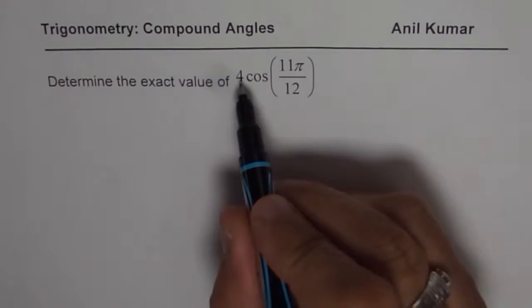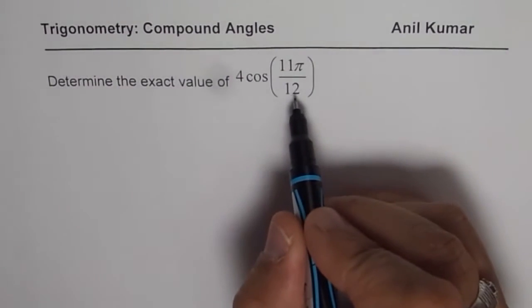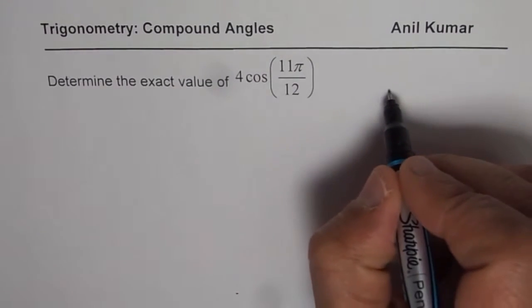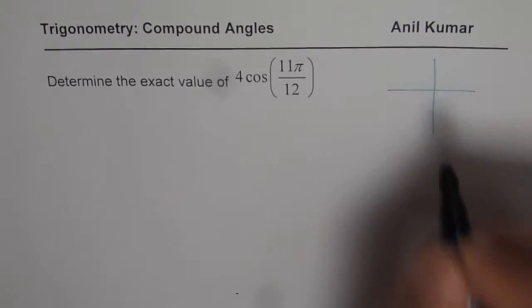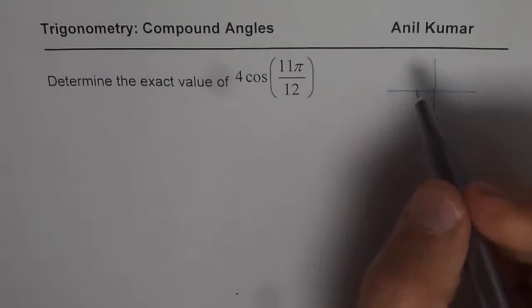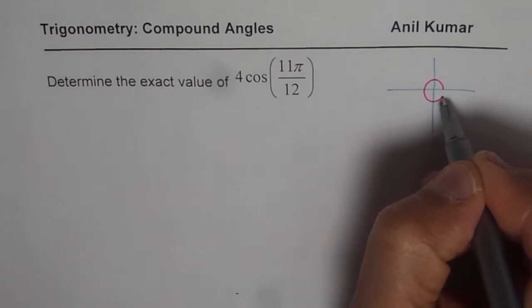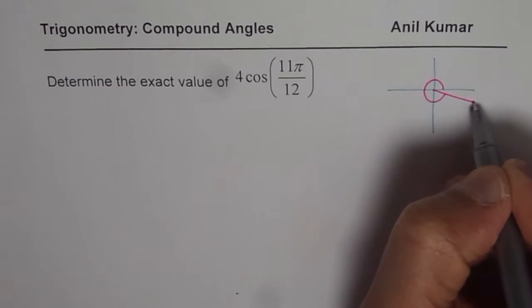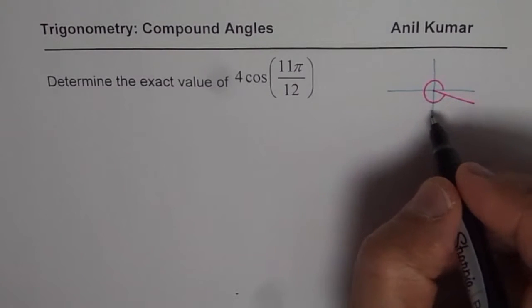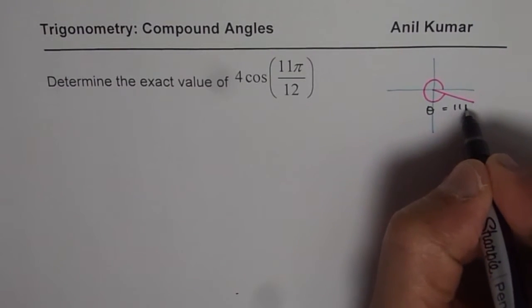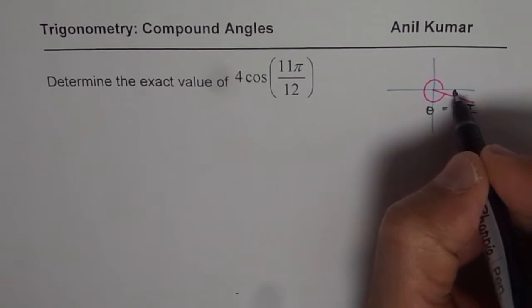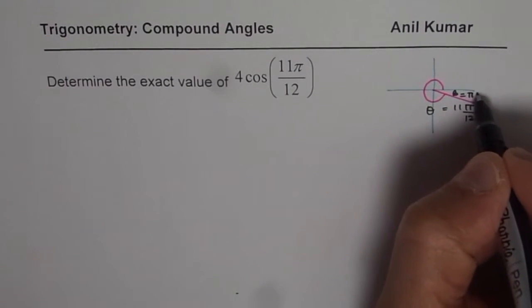Now when we want to find cos of 11π/12 times 4, let's figure out what is this equivalent to. So in the coordinate plane, cos of 11π/12 means that the principal angle is kind of here. That is the position, 11π/12. So theta here is equal to 11π/12. Now what is this acute angle, beta? Acute angle is π/12.